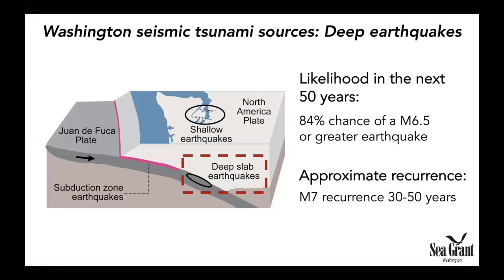The next source I'd like to talk about are deep earthquakes. These occur within the Juan de Fuca plate as it deforms because it's being shoved down beneath the North America plate. These are our most frequent earthquake source. We know that we've got about an 84% chance of having a magnitude 6.5 or larger earthquake in the next 50 years. These earthquakes recur on average between every 30 and 50 years, and the last large earthquake of this type in Puget Sound was in 2001, the Nisqually earthquake.